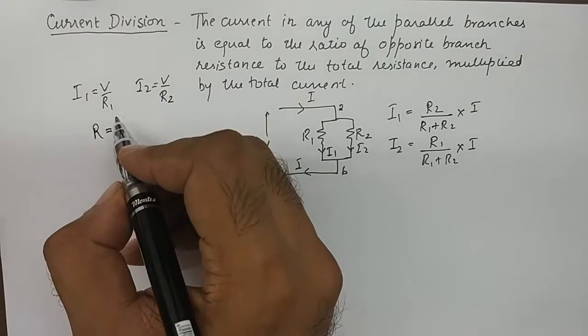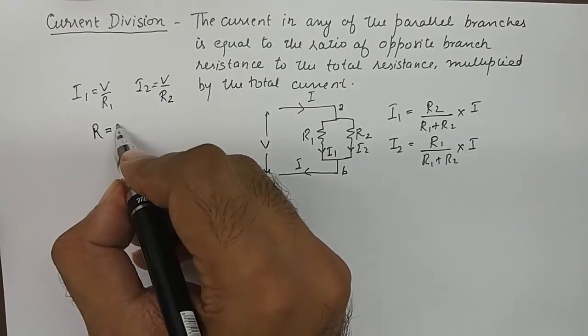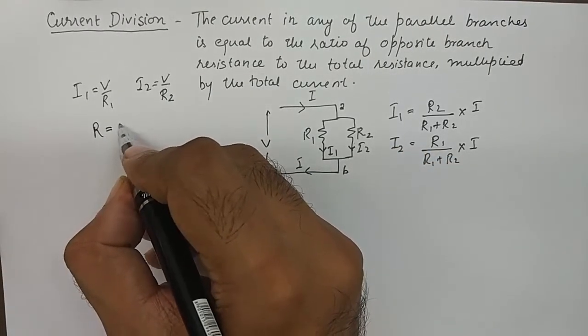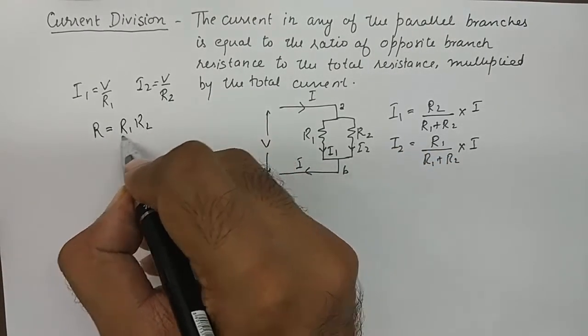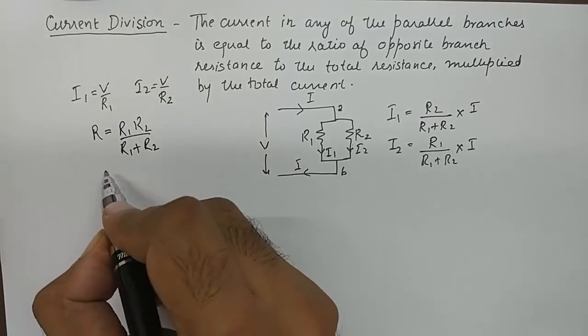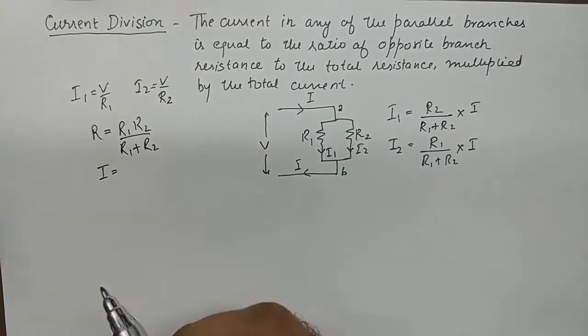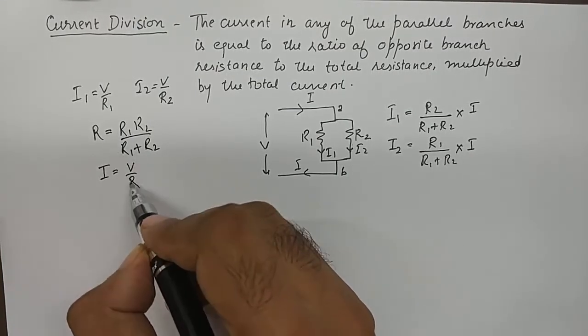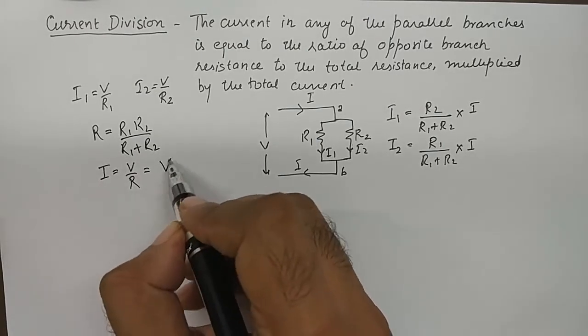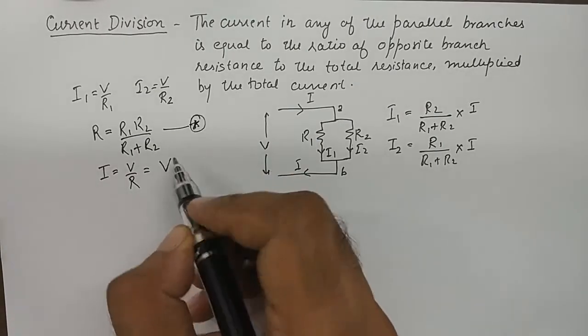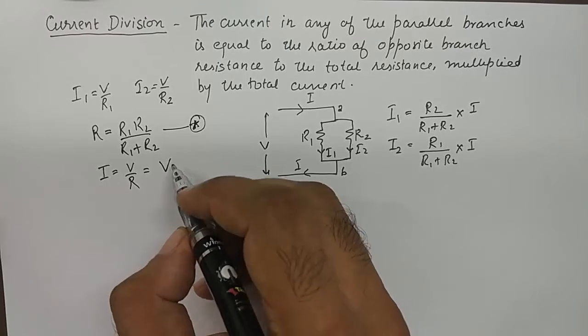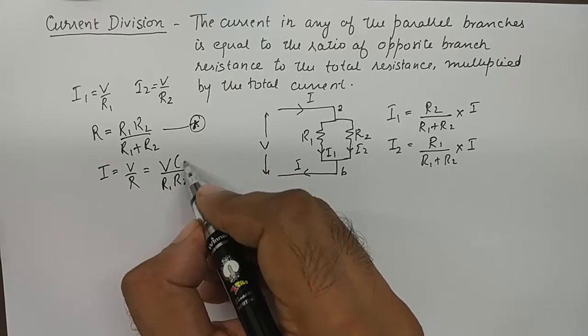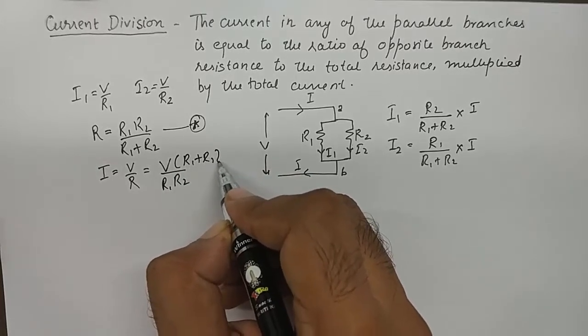And R, the total resistance of these two branches in parallel, is R1 R2 upon R1 plus R2. So if the total current was to be found, that will come out to be V by R. Substituting R from this equation, we get V upon R1 R2, and R1 plus R2 in numerator.